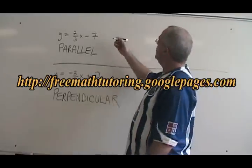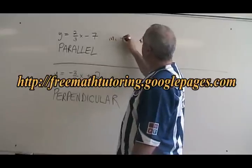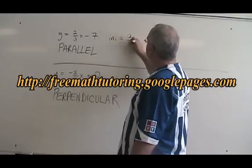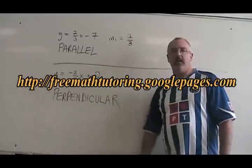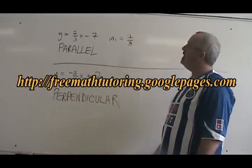We know that the slope of that line is 2 thirds. We are using the y equals mx plus b form to find the slope of the line.